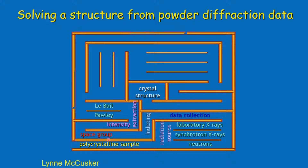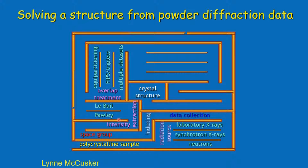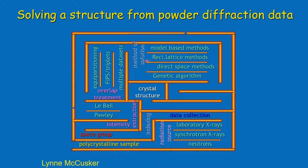Then there is the intensity extraction. The Labelle and Pauli methods are available. One of the major problems is going from the polycrystalline sample to indexing and space group — that is a real ordeal. Once you get over it, you can intensity-extract using Labelle and Pauli methods, and then you have to treat the overlaps. There are various mathematical ways to treat overlapping peaks, including collecting multiple datasets at different wavelengths to differentiate between overlapping peaks.